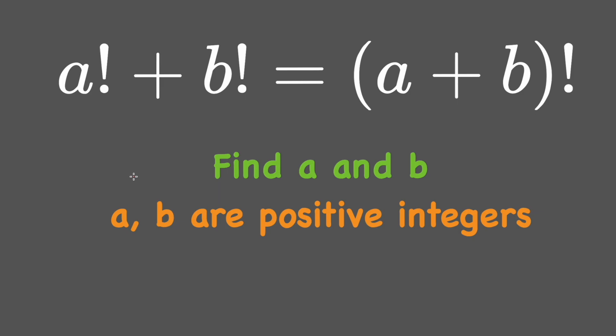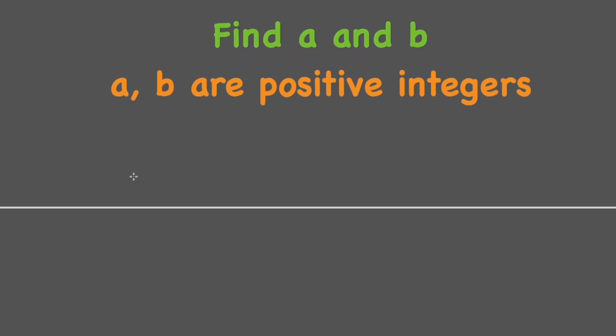So now let's get started. First of all, because the roles of a and b are similar, we can assume that there are two cases. The first case is if a equals b.